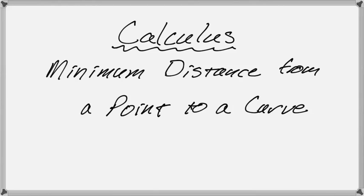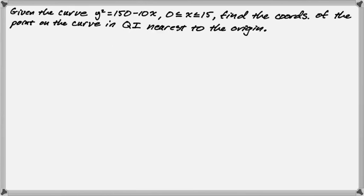Okay, in this video we are going to talk about minimizing the distance from a point to a curve. This is a pretty common minimization problem in calculus, so let's take a look at what the problem would say and then we will solve it. We are given the curve y² = 150 - 10x, where x is between 0 and 15. We're going to find the coordinates of the point on the curve in quadrant 1 that is nearest to the origin.